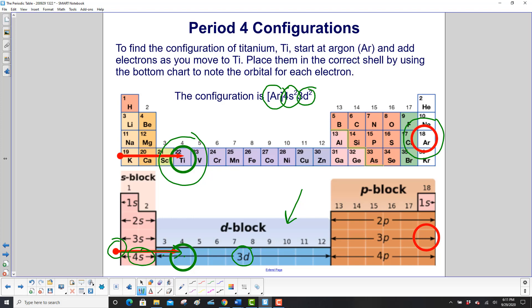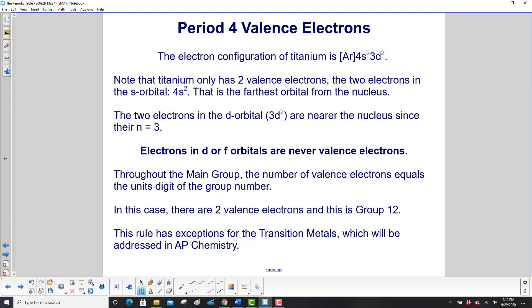That looks a little tricky, right? We went from 4s2 down to 3d. The electron configuration of titanium is argon, then 4s2 and 3d2. We pointed out on the previous slide how that looked a little unusual. We went 4 and then down to 3.